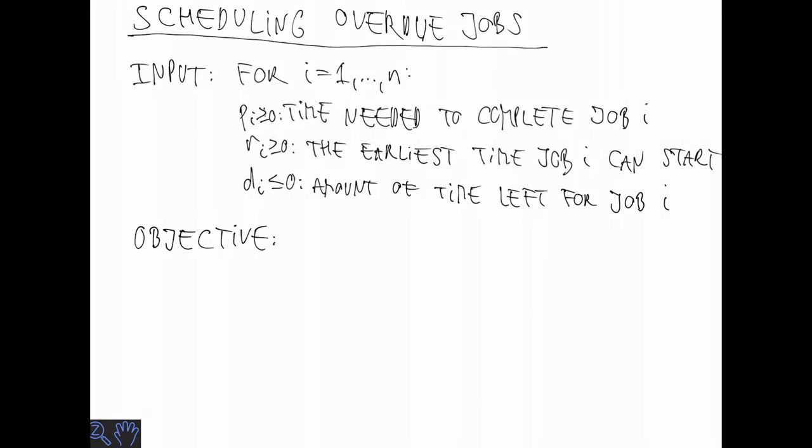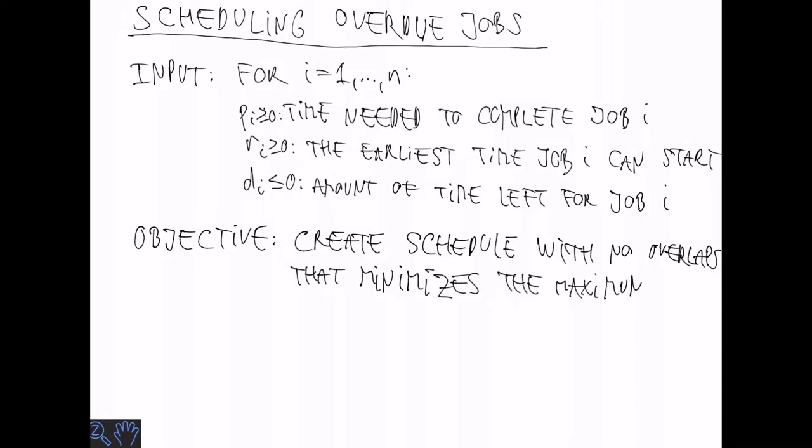So the objective that we want to optimize is to create a schedule with no overlapping jobs that minimizes the maximum lateness. So that is minimizes the maximum over i of ci minus di where ci is the completion time of job number i.